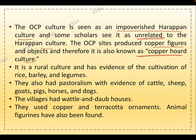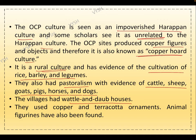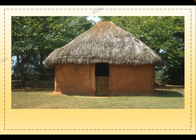The OCP or Copper Hoard Culture is a rural culture with evidence of cultivation of rice, barley, and legumes. They also practiced pastoralism with evidence of cattle, sheep, goats, pigs, horses, and dogs. The villages had wattle-and-daub houses using perishable materials. They used copper and terracotta ornaments, and animal figurines have also been found.